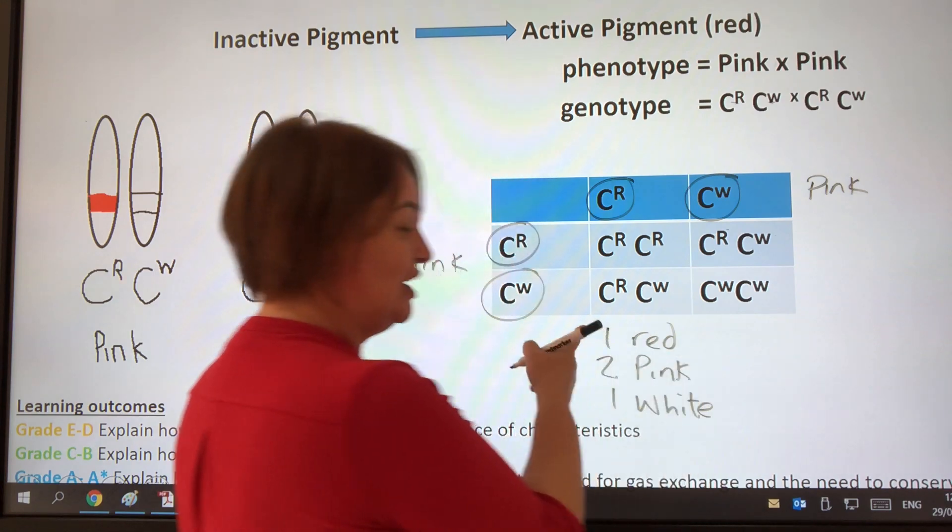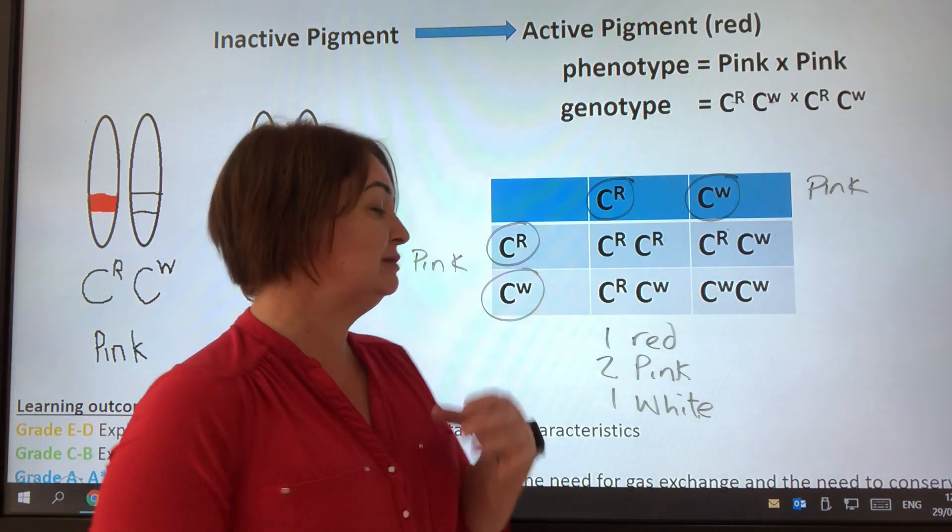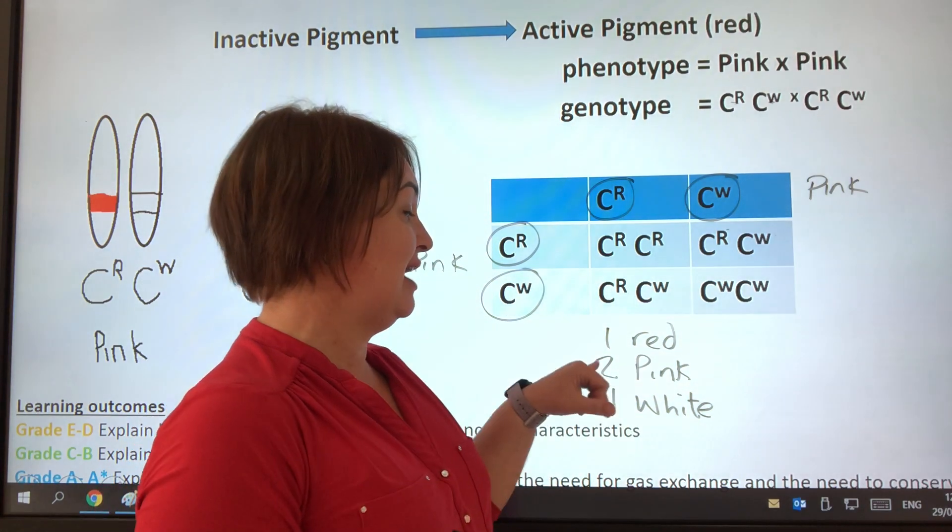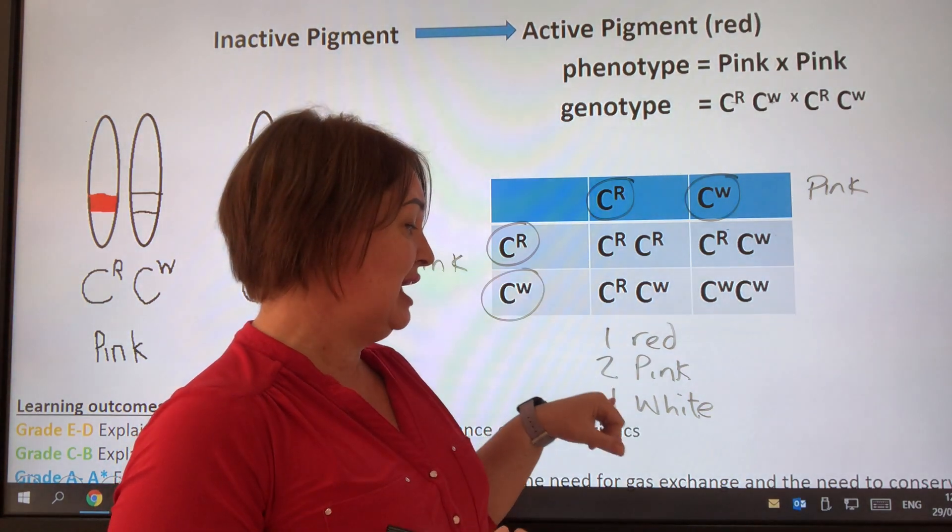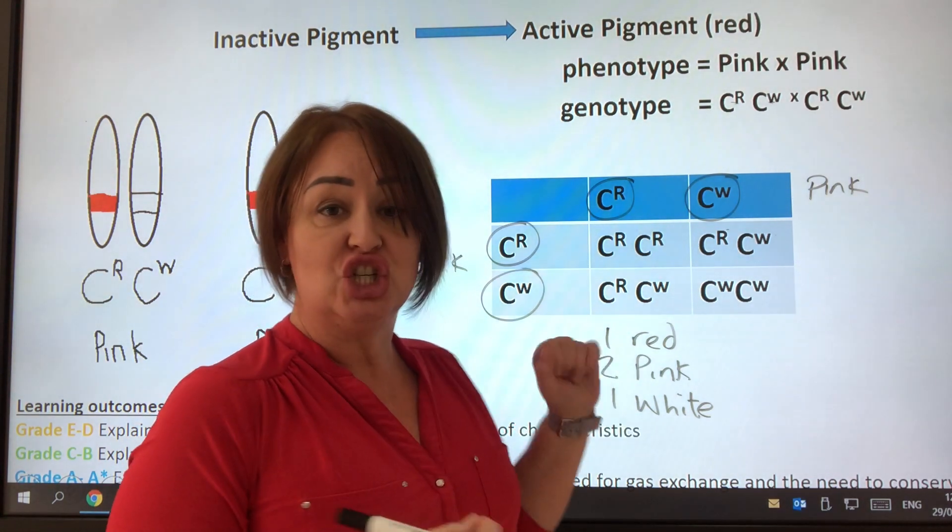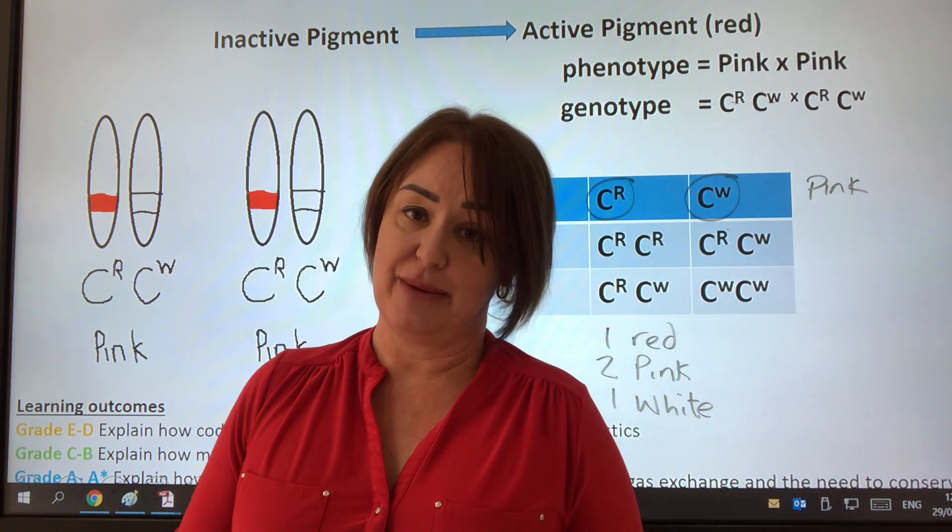In other words, 25% chance, because remember it's random and it might not actually happen like that, 50% chance of pink, and 25% chance of a white flower.